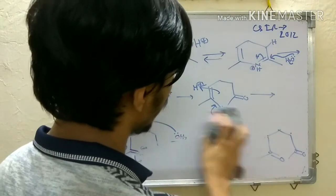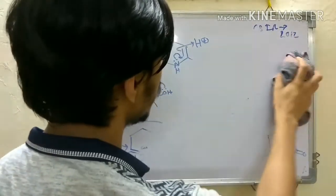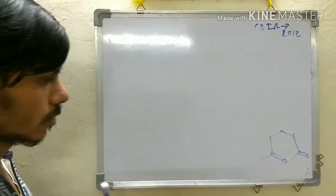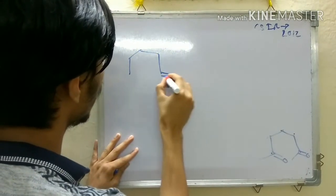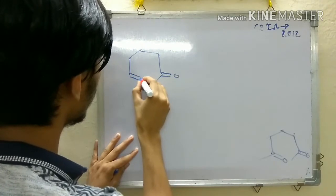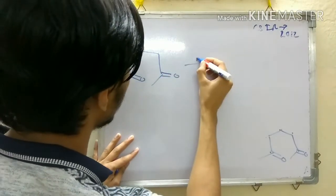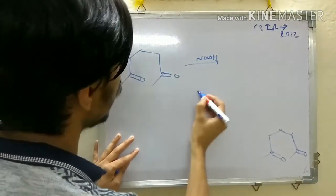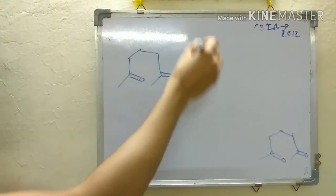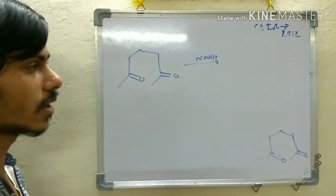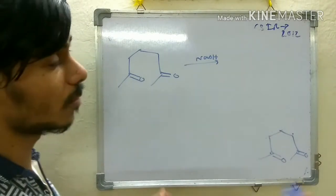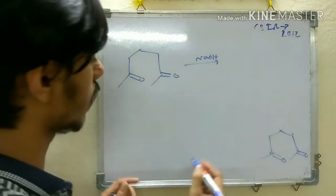Now when you look at this 2,5-diketone and you have basic medium NaOH, this reaction condition will immediately remind you of one reaction - Robinson annulation, which is intermolecular aldol.